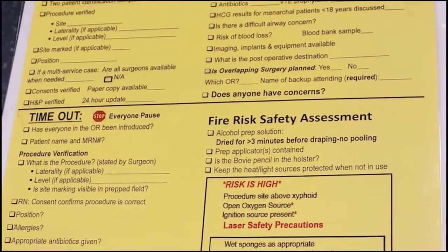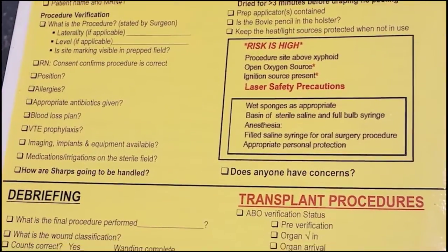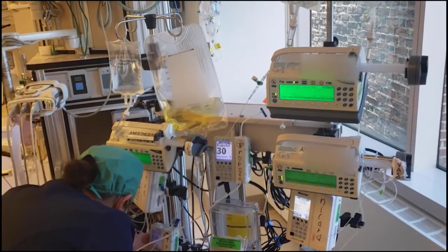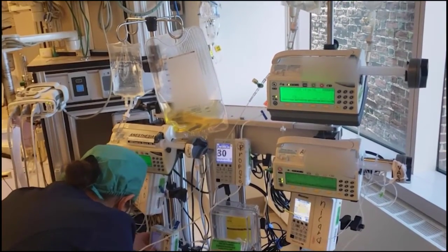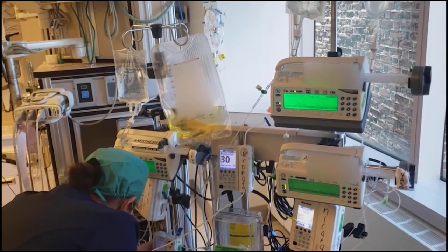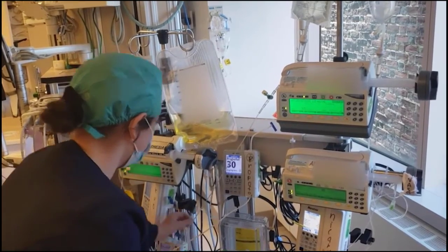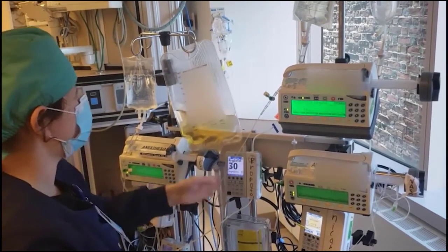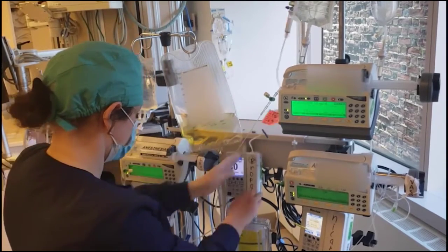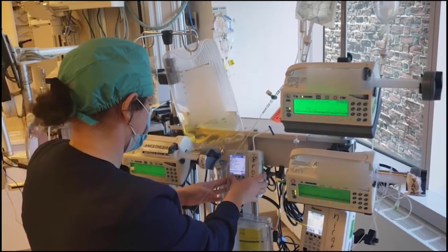Before starting the procedure, perform a pre-procedure timeout to verify the patient's identity and the procedure to be performed. After the timeout, ask the patient's nurse to administer a short-acting paralytic agent and, if necessary, additional sedation. Inadequate paralysis increases the risk of inadvertent extubation when the oral endotracheal tube is being manipulated. The nurse should then step out of the room to minimize exposure, but should be immediately available and ready to enter in case assistance is needed.